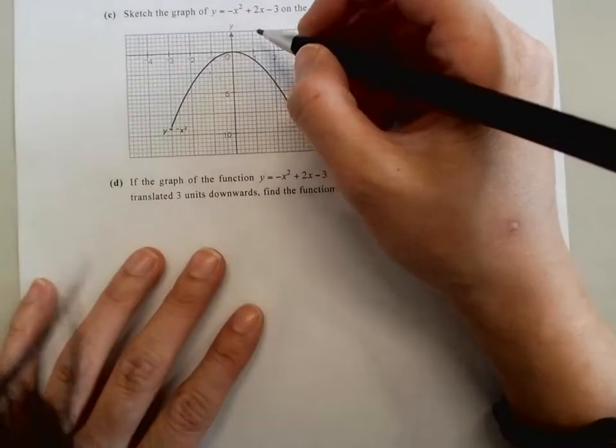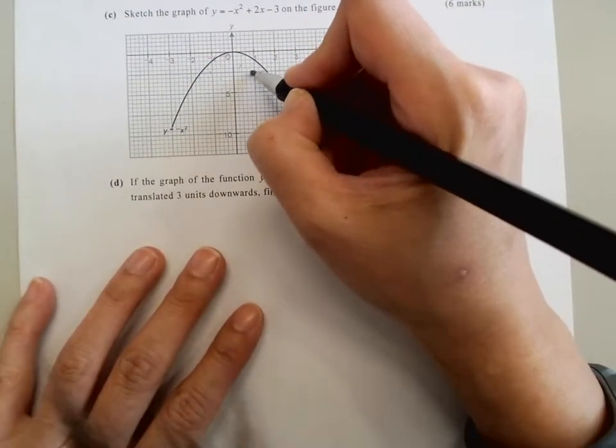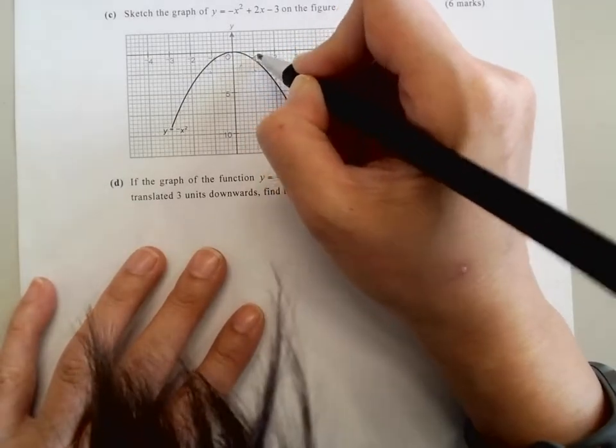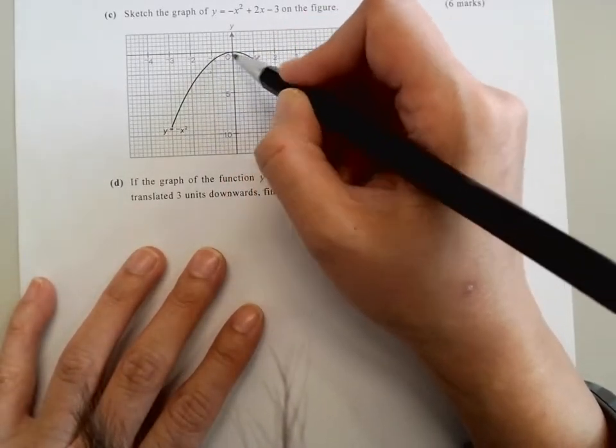And last but not least, we're going to sketch that on the graph. So that will be one unit to the right and two units downwards, so it's like here. Beware of the scale. We have it here, looks like that, as long as it looks cool.